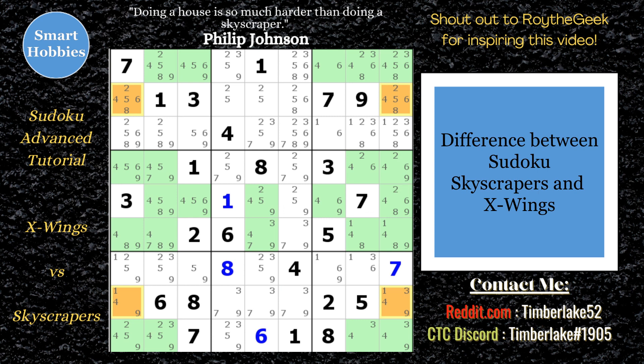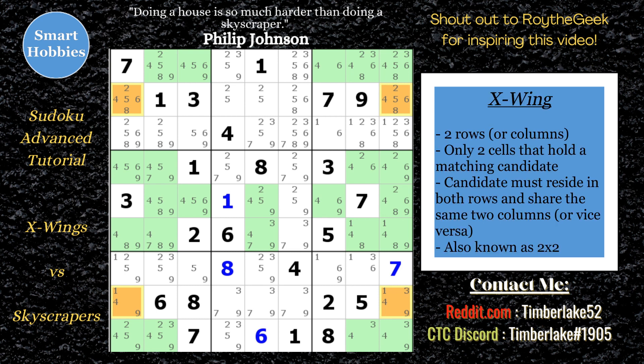Greetings, friend. Timberlake here. Let's start with the X-Wing. So what's the definition of a Sudoku X-Wing? An X-Wing pattern occurs when there's two rows or two columns that each contain only two cells that hold a matching candidate. The candidate must reside in both rows and share the same two columns, or vice versa.